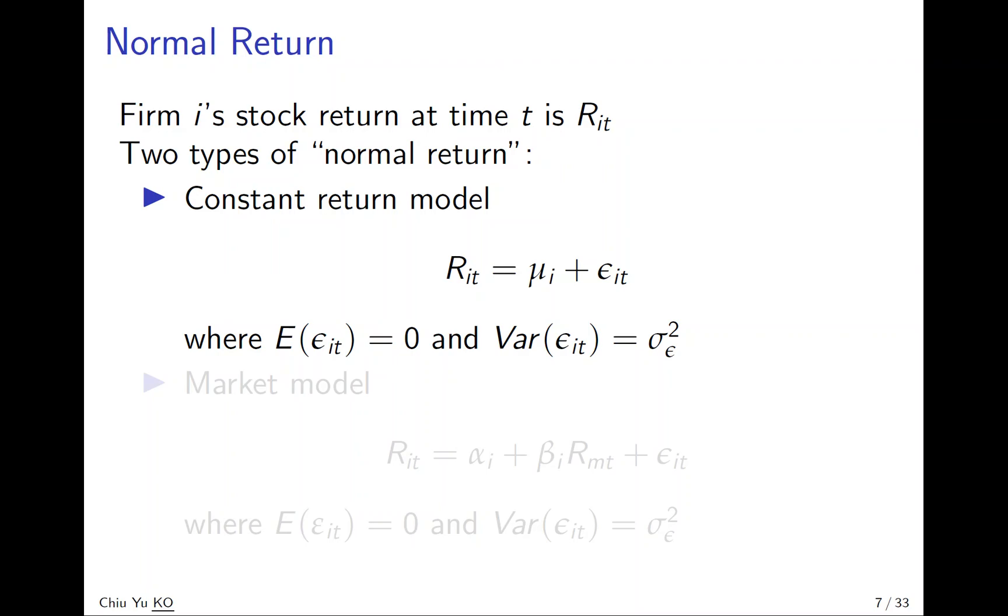The other is similar to a factor pricing model. The return of the stock is some constant alpha_i, similar to mu_i, but it is not independent of the market. We have a market return and some beta_i.